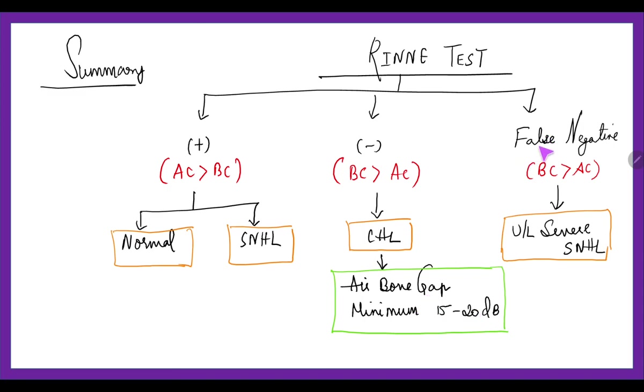There can be another possibility of false negative test wherein bone conduction is still better than air conduction, but because of transcranial transmission, this is happening. This is in case of unilateral severe sensorineural hearing loss. In case of this false negative, we can also use Barany's noise box to check it out, but rather we can go for other Weber test and other audiometry tests to confirm. Thank you so much for your patient listening.